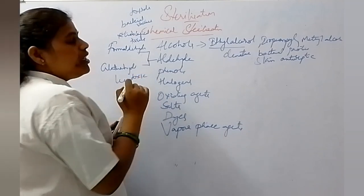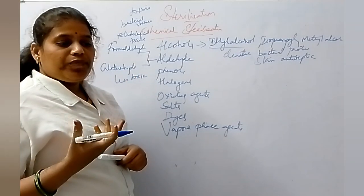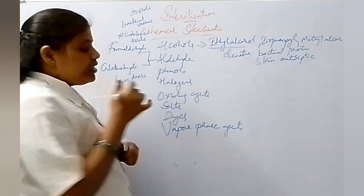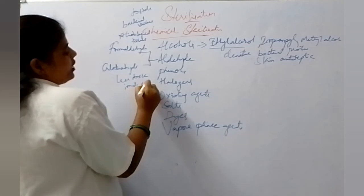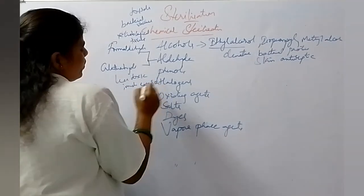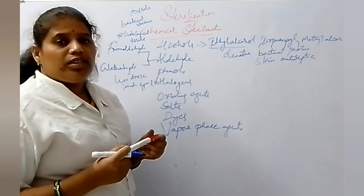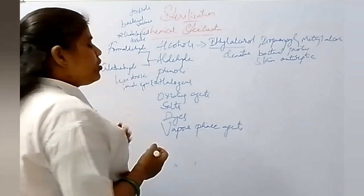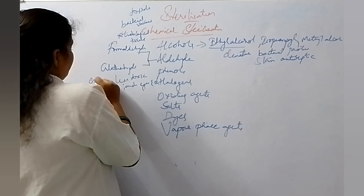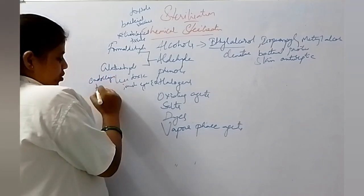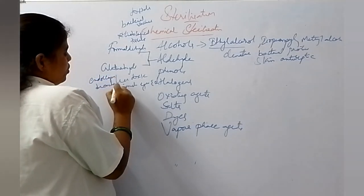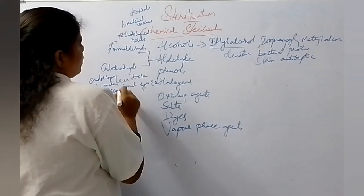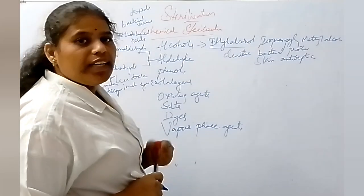Formaldehyde is very irritant to our eyes and skin. Glutaraldehyde is used for the cleaning and sterilization of endoscopes, bronchoscopes, and cystoscopes. That covers the aldehydes. Next is phenol.